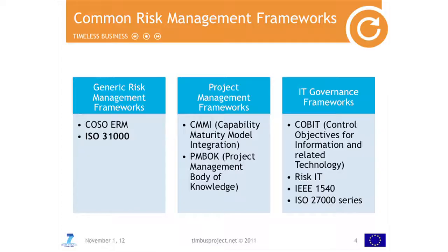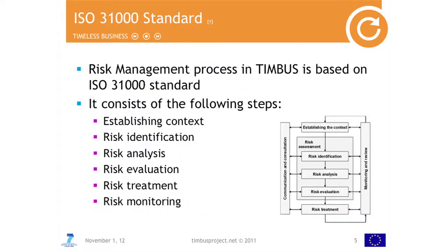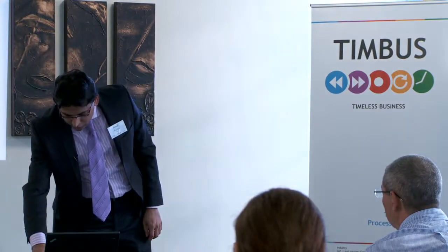The idea was to look into various frameworks — generic risk management frameworks, project management frameworks, and IT governance risk frameworks — and to find out which one is the best optimal one for our usage in the project. We decided for ISO 31000, and the reason, as you can see in the table, is that we looked into these frameworks from the principles and features perspective, evaluating how they are supported — partially or fully — and if they basically fit our needs. In the end, we adopted the ISO 31000 standard.